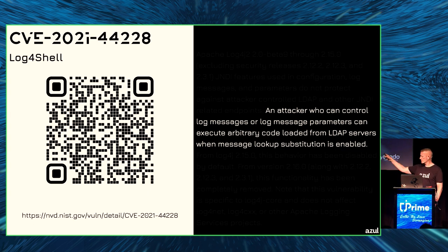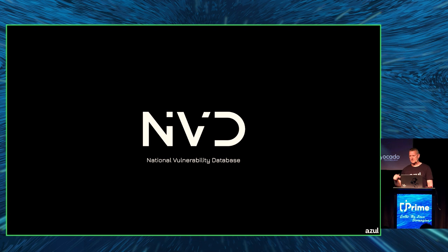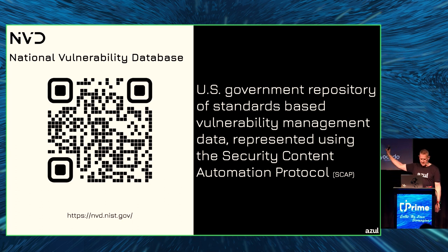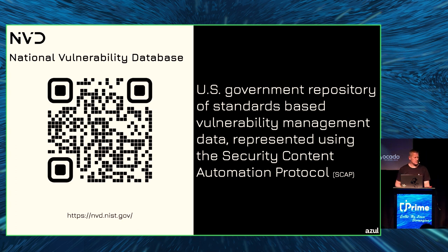There's also NVD — the National Vulnerability Database. This database is from the U.S. government and contains all the CVEs and all information about them. If you'd like to look something up and have no idea where to start, go to nvd.nist.gov. They even have an API — you can sign up for a key and use it in your code if you like.